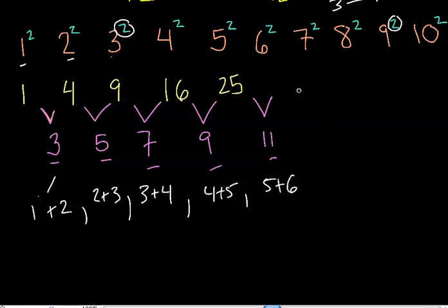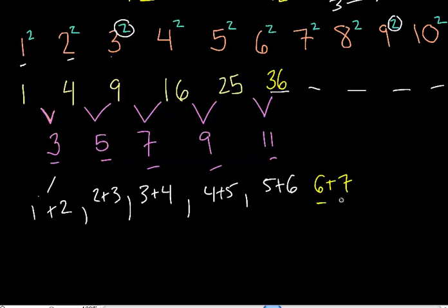Let's use this pattern to figure out the square numbers for six, seven, and eight. After twenty-five, the difference is five plus six, which is eleven — so twenty-five plus eleven gives us thirty-six. Then to get from the sixth to the seventh square number I add six plus seven, which is thirteen — so thirty-six plus thirteen gives us forty-nine. Then I add seven plus eight, which is fifteen, on top of that and I get sixty-four.